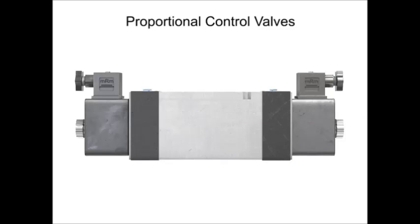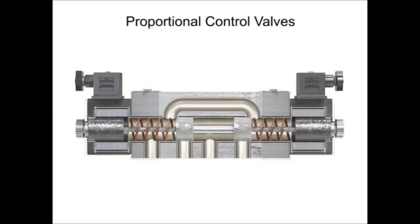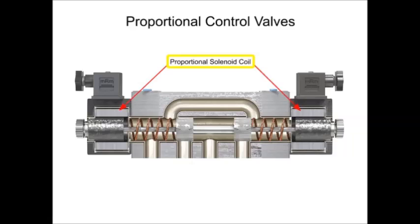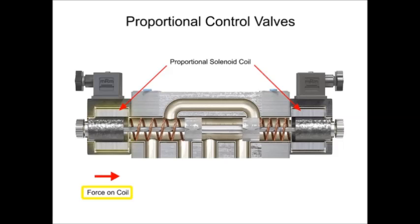Proportional control valves offer a solution to the complexity dilemma without introducing dozens of valves and hydraulic loops to the system. Physically, proportional valves appear similar to their on-off solenoid counterparts. The big difference is in the way their solenoid coils perform. Proportional coils operate on DC current and produce varying voltages that in turn produce a variable force to shift the spool.